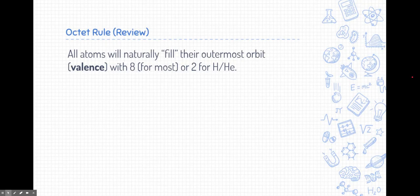In order to understand compounds thoroughly, we need to understand why atoms form bonds, and a big part of that deals with the octet rule. All atoms will naturally fill their outermost orbit, or we call that the valence, with eight electrons, which is why it's called an octet. And that's for most atoms. There are a few exceptions here or there. For example, hydrogen and helium, they only want two, even though we still call that an octet.